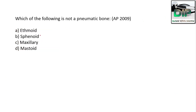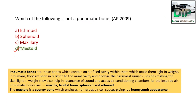Next question. Which of the following is a pneumatic bone? Option A: ethmoid. Option B: sphenoid. Option C: maxillary. Option D: mastoid. The correct answer is mastoid. Pneumatic bones are those bones which contain an air-filled cavity within them, which makes them light in weight. In humans, they are seen in relation to the nasal cavity and enclose the paranasal sinuses.